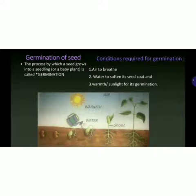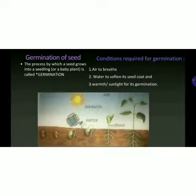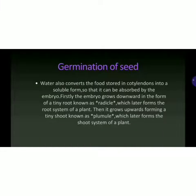Thirdly, it needs warmth and sunlight for germination. Sunlight provides that warmth to the seed to germinate. It also requires soil — when the seed is put into soil, the soil also provides warmth to help it grow. Water also converts the food stored in the cotyledons into a soluble form so that it can be absorbed by the embryo. So the food present in the cotyledons can be absorbed once it is converted into a soluble form with the help of water.